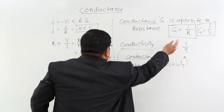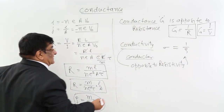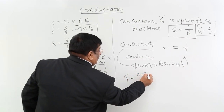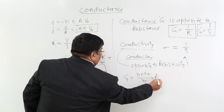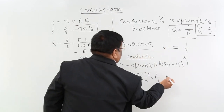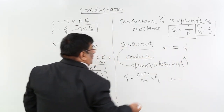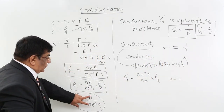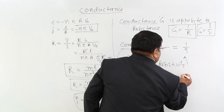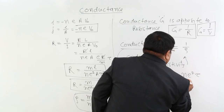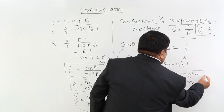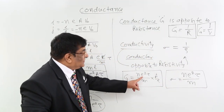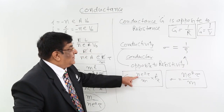Conductance G equals 1 upon R, so G equals Ne²τA/(ML). Conductivity sigma equals 1 upon rho, so sigma equals Ne²τ upon M. These are all the formulas in terms of electron charge, electron mass, and number density.